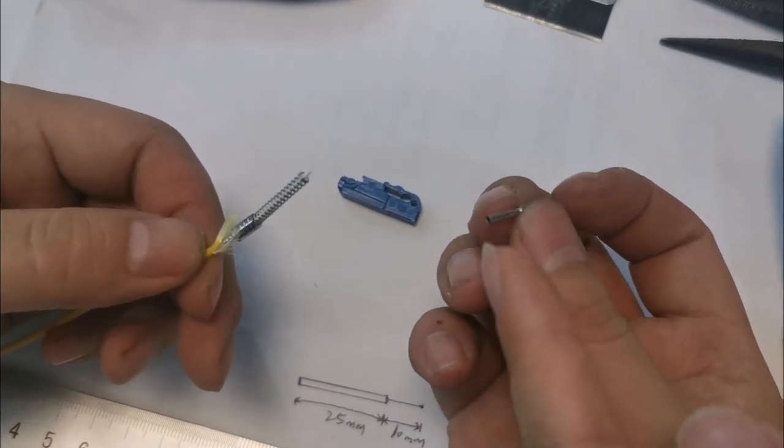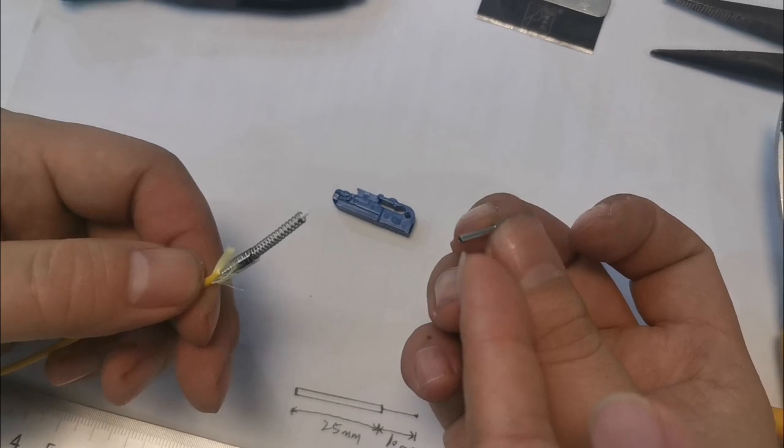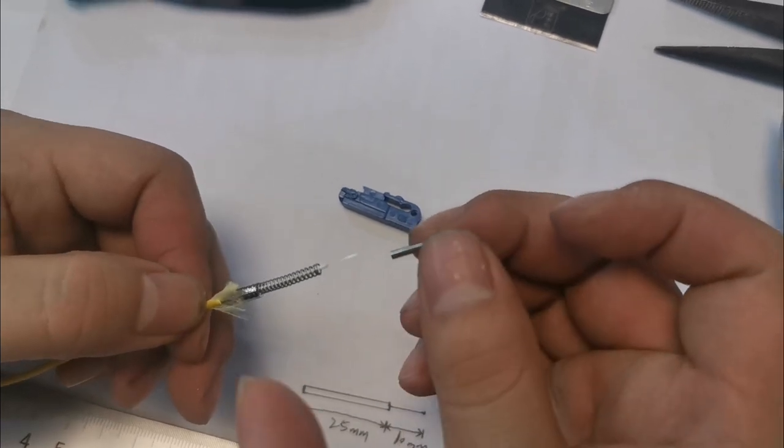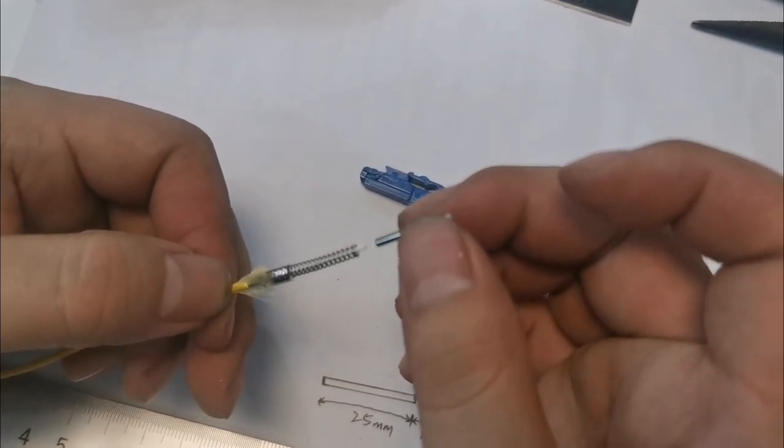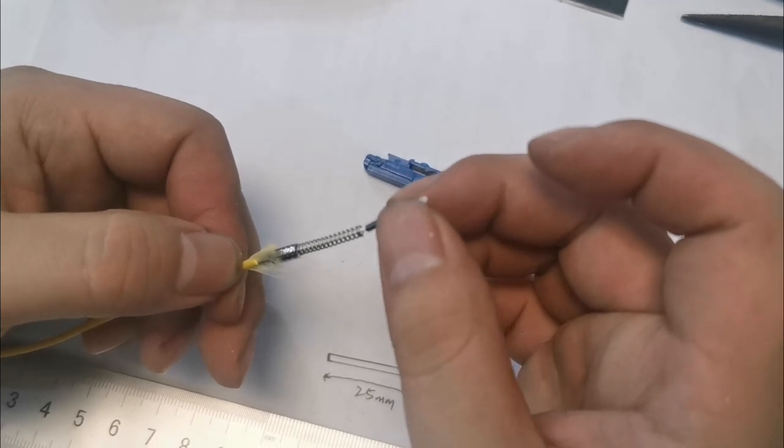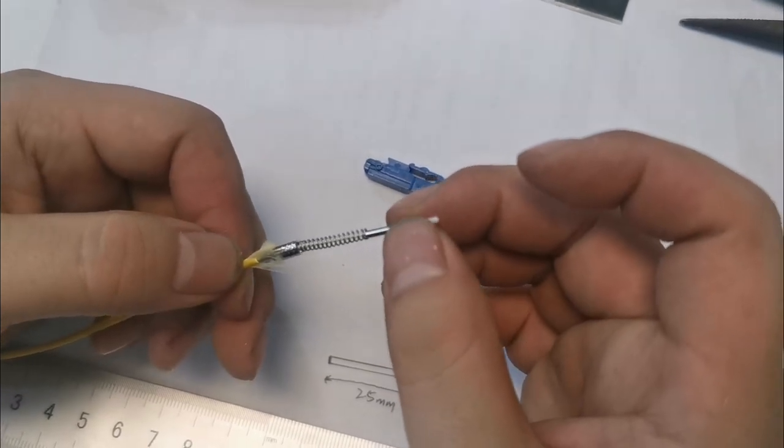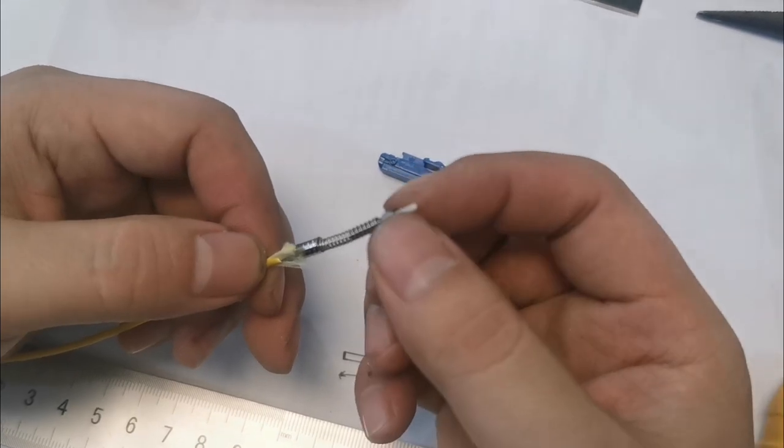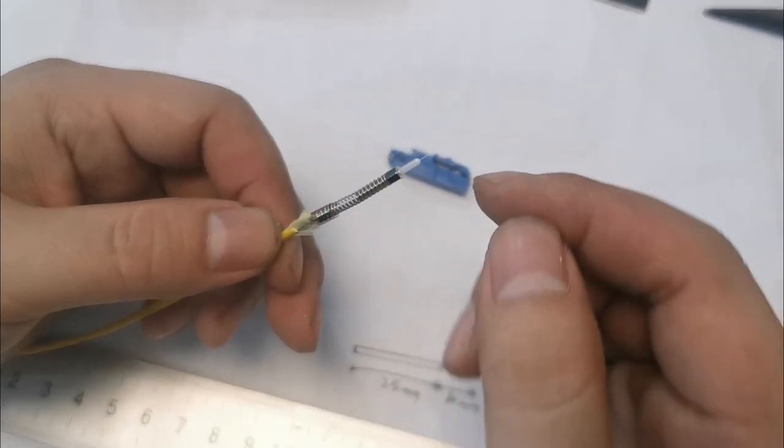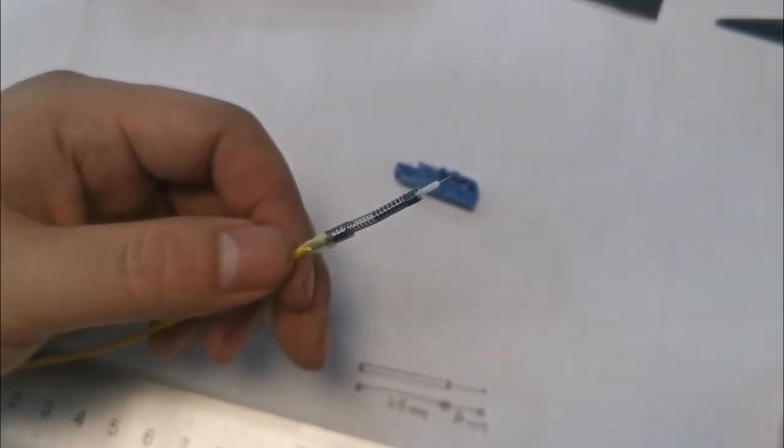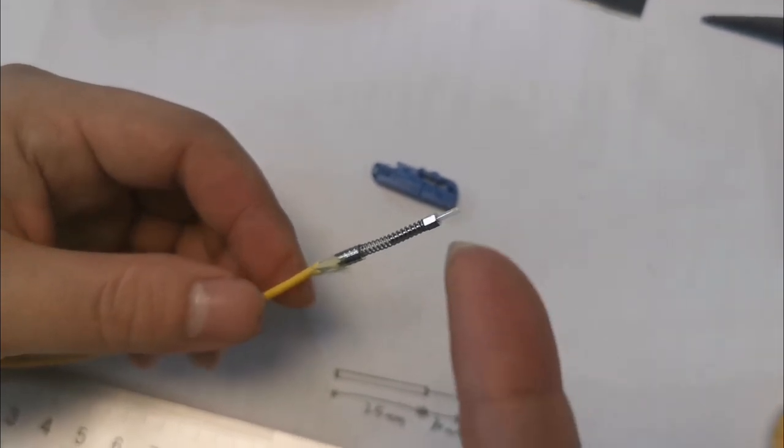We should inject the epoxy into the ferrule before putting in the fiber. Carefully. Make sure the fiber is out from the ferrule.